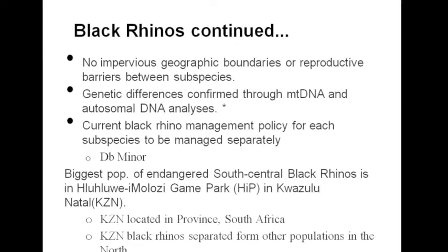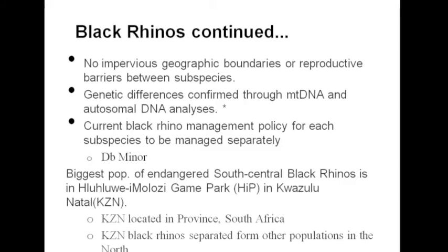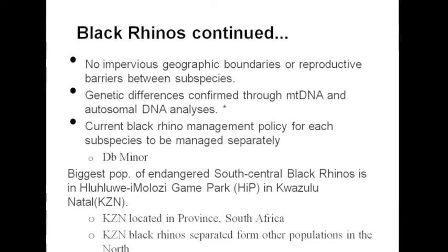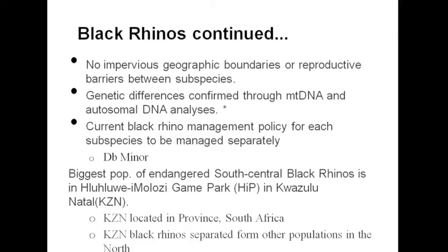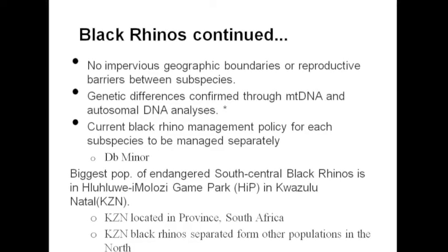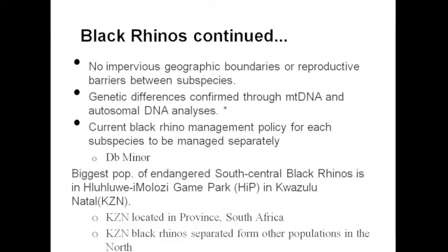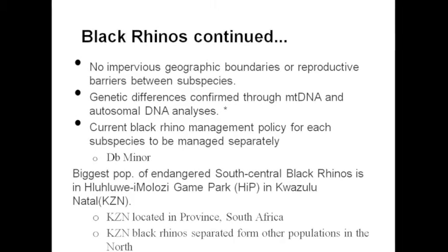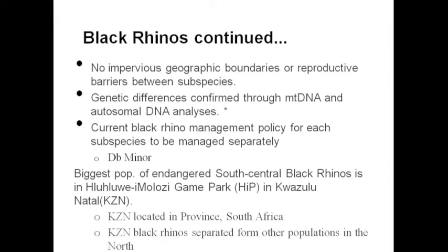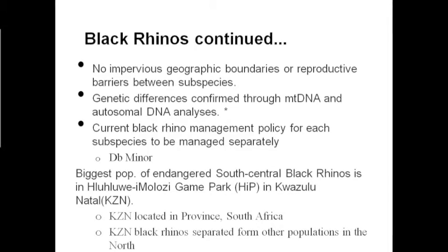Each genetic subspecies is believed to have genetic or behavioral adaptations to its local environment, confirmed through mtDNA testing and autosomal DNA analysis. The current black rhino management policy is separate for each subspecies to maintain possible local adaptive traits and minimize the risk of outbreeding depression. The largest population of endangered south central black rhinos is located in a game park called Hluhluwe-iMfolozi, known as HIP.